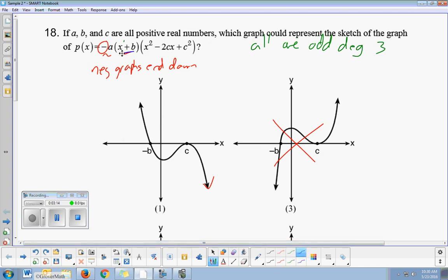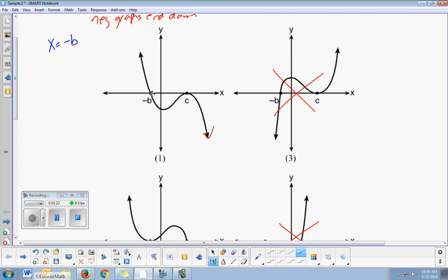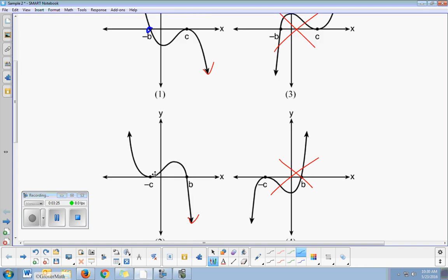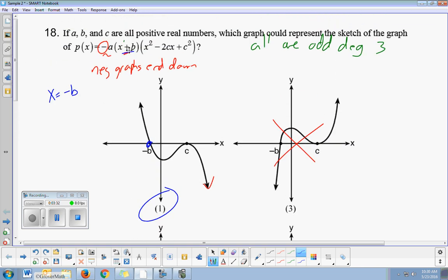Then, x plus b is a factor. Now if x plus b is a factor, that means that x equals negative b is a zero or a root. And so the graph's got to cross that negative b. It does. It's got to cross that negative b. It does not. So here's my answer right here. And that's all you really have to do, but we could go further.